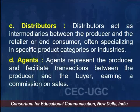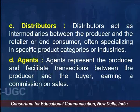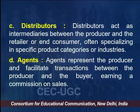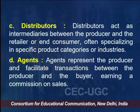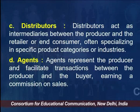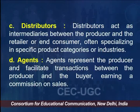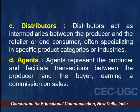Next, we have distributors. Distributors act as intermediaries between the producer and the retailer or end consumer, often specializing in specific product categories or industries. And then we have agents. An agent represents the producer and facilitates transactions between the producer and the buyer, earning a commission on the sales.